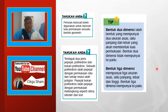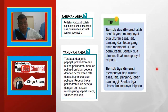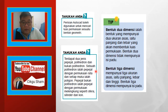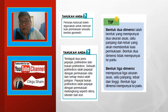Bentuk 3 dimensi punya 3 ukuran asas iaitu panjang, lebar dan tinggi. Bentuk 3 dimensi punya isi padu — itu beza dia. Lagi, tahukah anda terdapat 2 jenis pepejal: polihedron dan bukan polihedron. Sebuah polihedron ialah pepejal dengan permukaan rata dan setiap muka ialah poligon. Pepejal bukan polihedron ialah pepejal dengan permukaan melengkung seperti sfera, selinder dan kon.